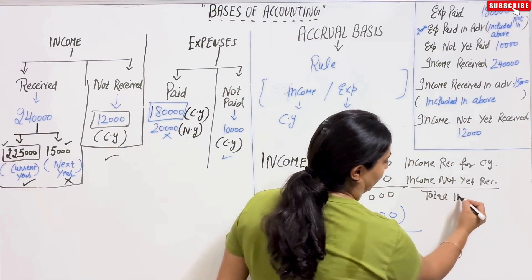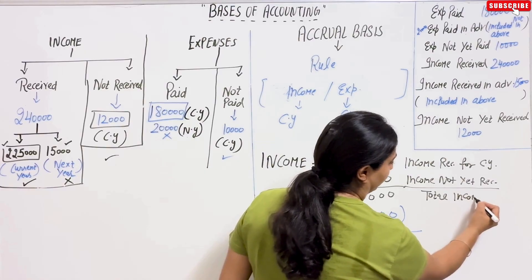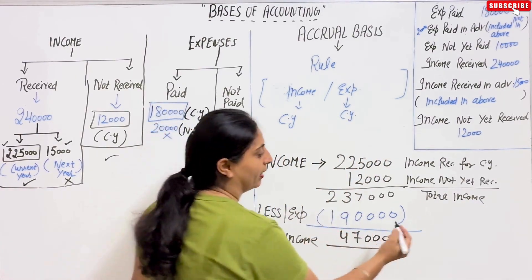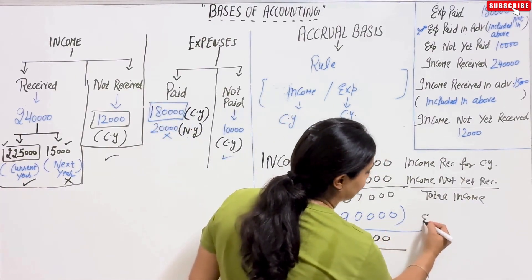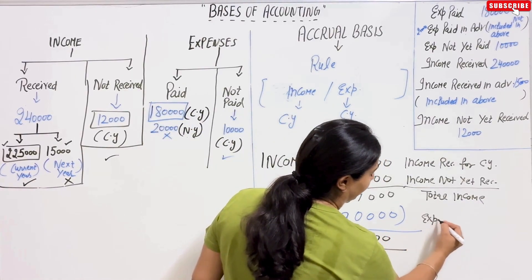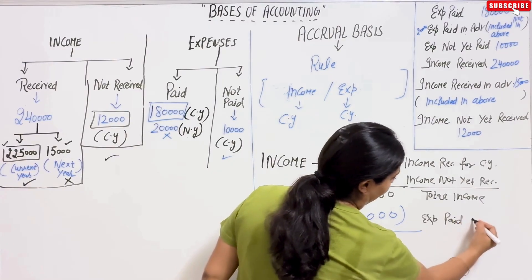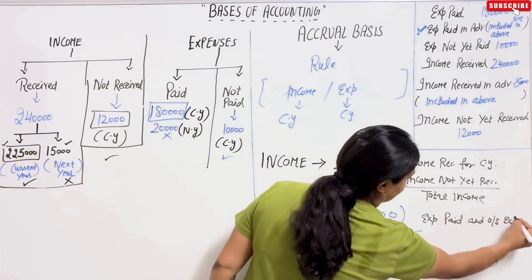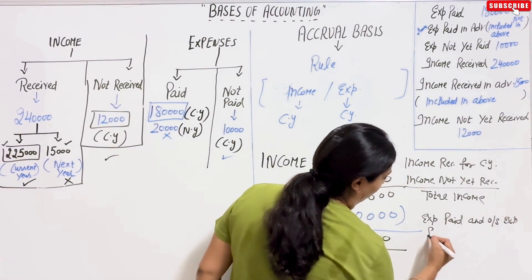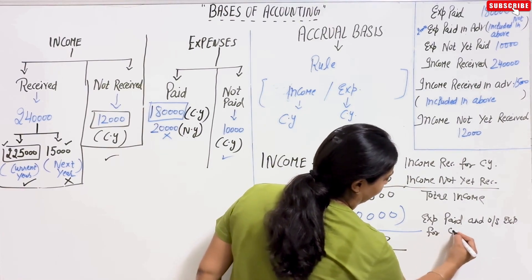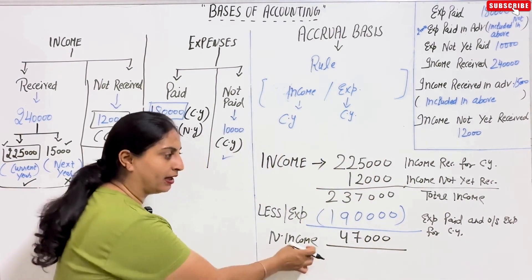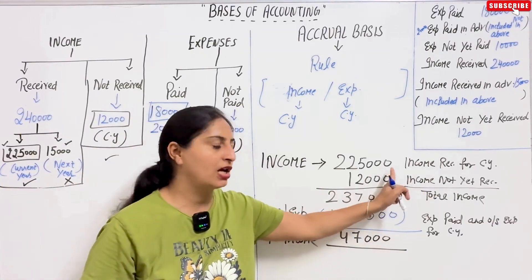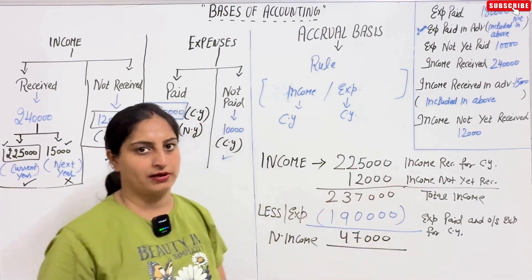So total income minus expenses — which includes expenses paid and outstanding expenses for the current year — gives the net income. The explanation of what amounts to include is necessary for writing the final answer.